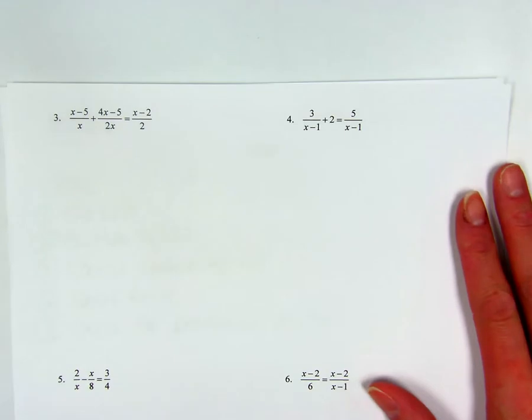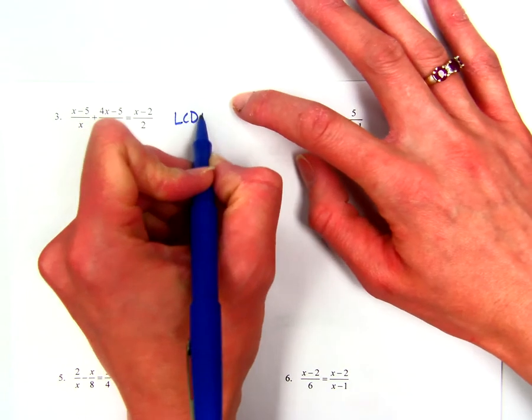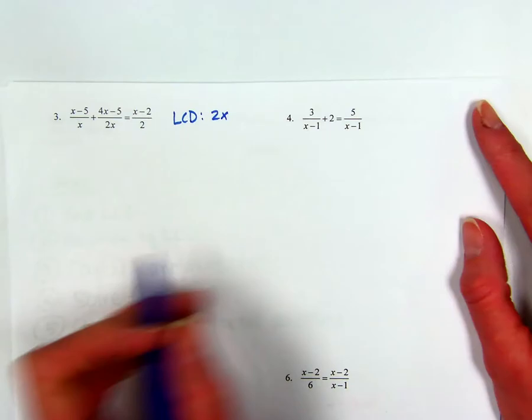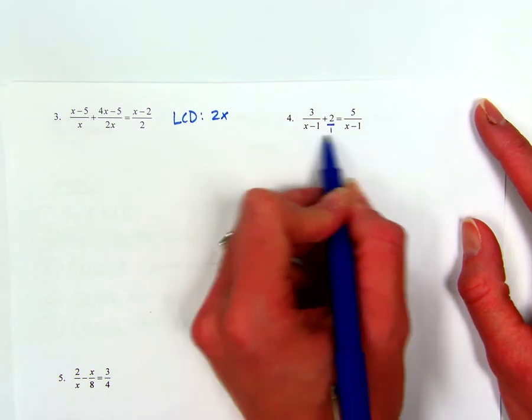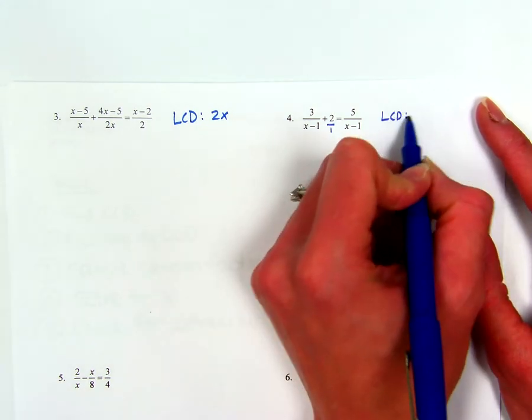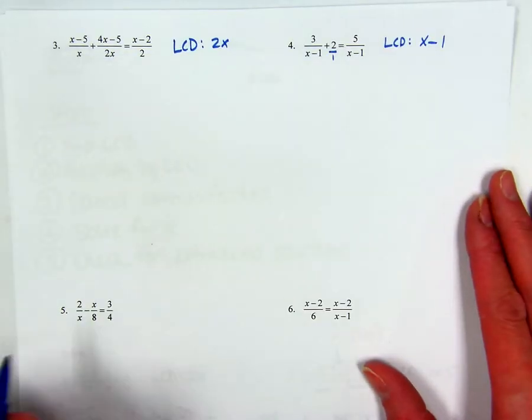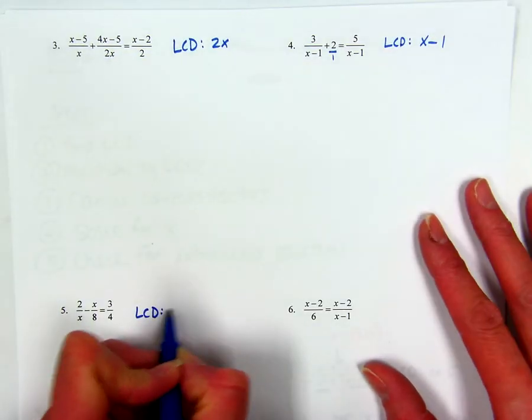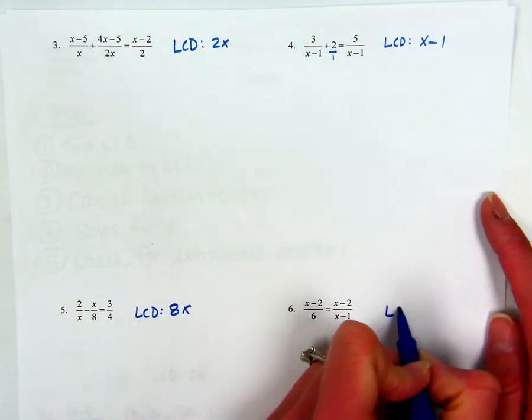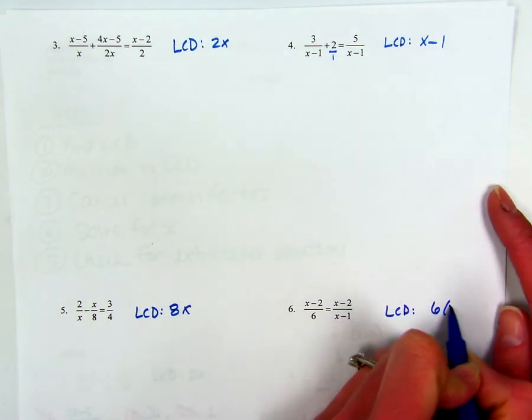Okay, you're going to keep going. Find your LCD first. Just 2X will work for all these. This one, my LCD is just X minus 1. If you want to find your LCD down here, 8 and 4 both go into 8, so my LCD is 8X. And over here, my LCD is 6 times X minus 1.